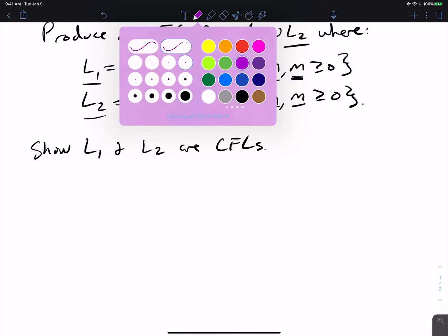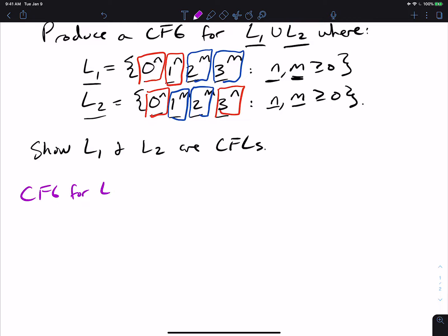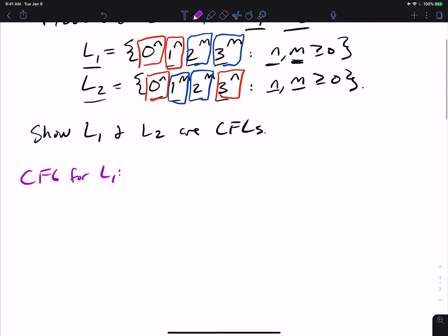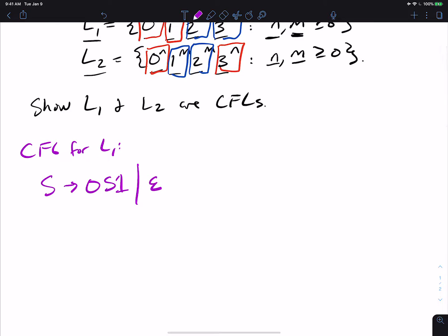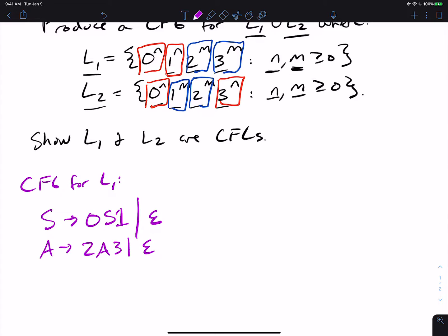So let's make a CFG for L1. That means I've got to be able to produce 0 to the n, 1 to the n. And we know how to do that. That's just s goes to 0 s 1 or empty. But how do we make this so that this works with 2s and 3s afterward? So if I make an additional copy of this, let's just change the variable up. I got to be able to make 2 to the m, 3 to the m.